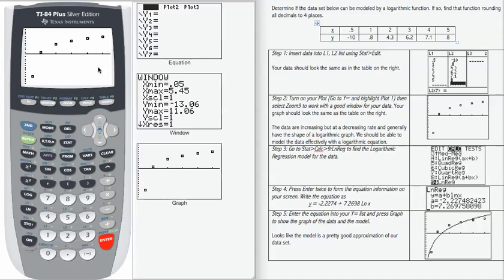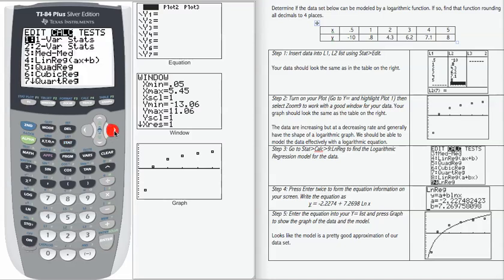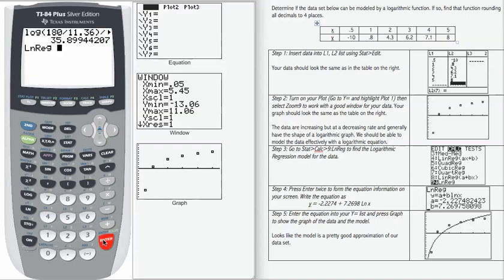To do that, let's go to stat calc number 9, which is logarithmic regression. So we're going to do what's called the natural log, which is a special kind of logarithm. It's a logarithm base e. And we're going to enter.